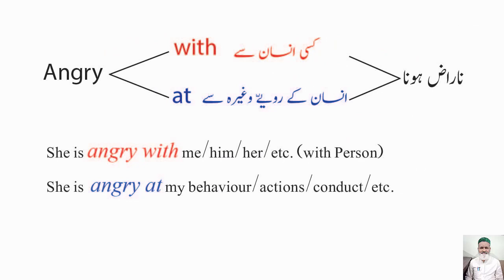Next word: angry — angry کے ساتھ 'with' بھی ملے گا اور 'at' بھی۔ Agree کی طرح، جب کسی person سے angry ہوں تو 'angry with' آئے گا، اور اگر اس کے رویے یا behavior سے angry ہوں تو 'angry at' آئے گا۔ مثال: She is angry with me / with him. اور: She is angry at my behavior / my actions / my conduct.